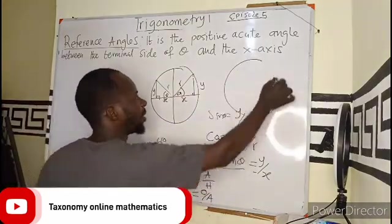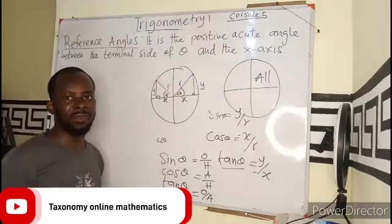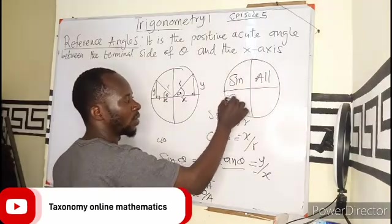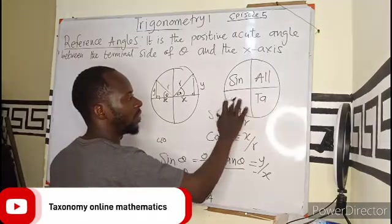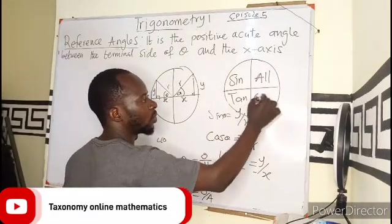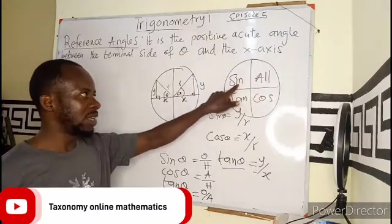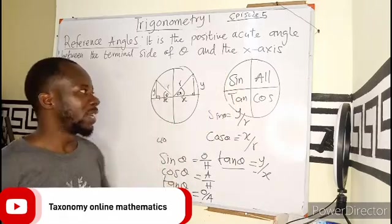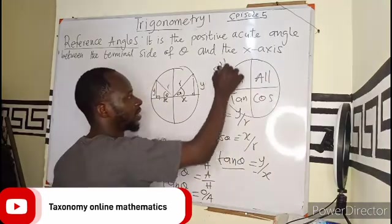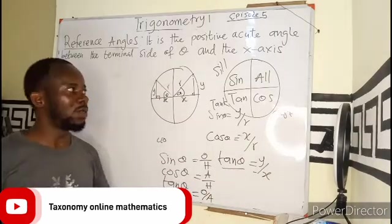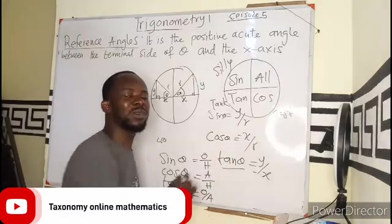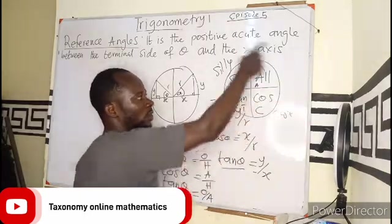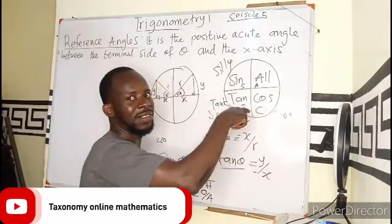So to summarize: all ratios are positive in the 1st quadrant; in the 2nd quadrant, only sin is positive; in the 3rd quadrant, only tan is positive; in the 4th quadrant, only cos is positive. There is an acronym to remember this: ALL SILLY TANK CAST, or simply CAST — starting from the 4th quadrant: C (cos), then 1st quadrant: A (all), 2nd quadrant: S (sin), 3rd quadrant: T (tan). You can use CAST to remember this.